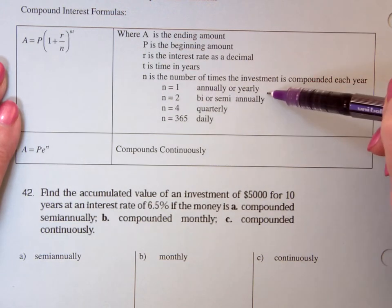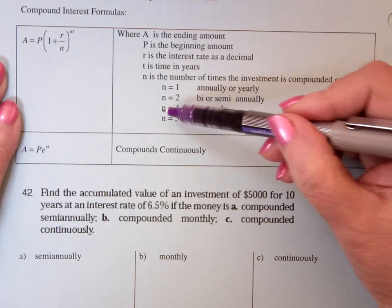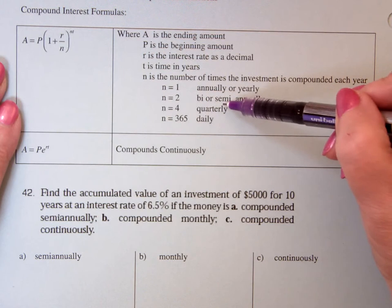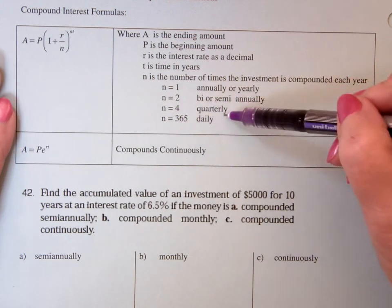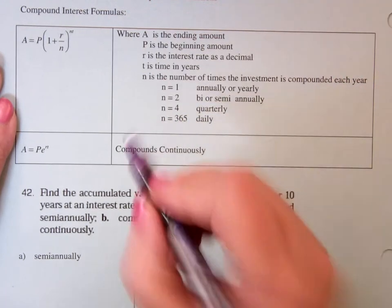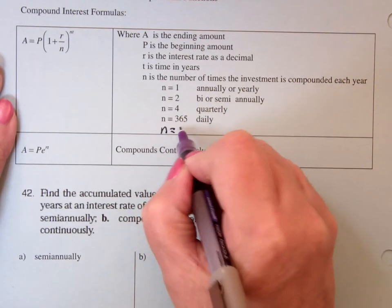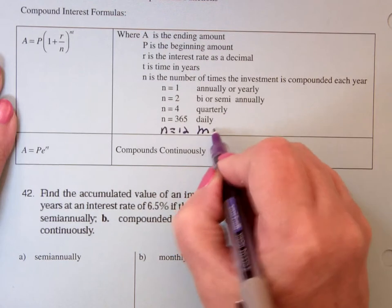So if N equals 1, it's annually or yearly. N is 2, bi or semi-annually. N is 4, quarterly. N is 365, daily. And of course there is another N. N is 12, this is monthly.